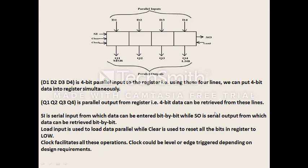In a shift register, we have four flip-flops — typically four D flip-flops — that are connected in parallel to one another. The input is parallel and the output is parallel. We have Q1, Q2, Q3, Q4 as outputs and D1, D2, D3, D4 as inputs, all connected in parallel. We have a serial input from which data can be entered bit by bit, and a serial output (SO) from which data can be retrieved bit by bit.